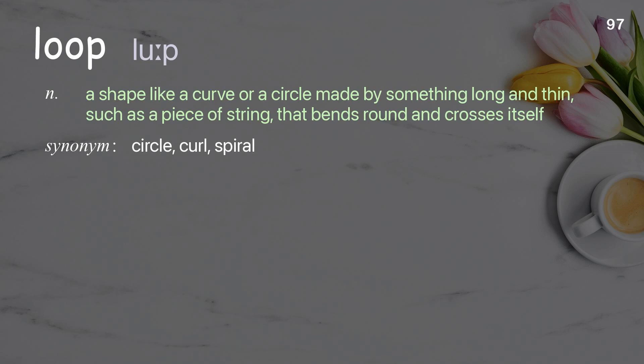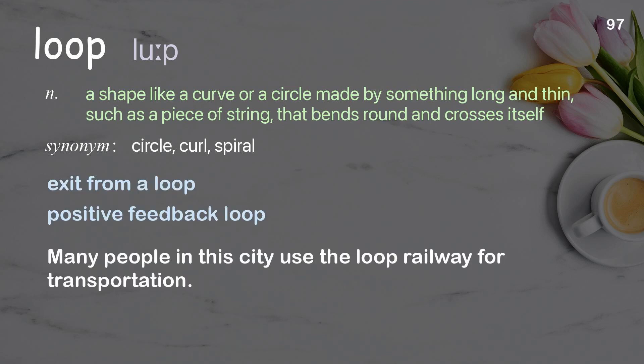Loop: a shape like a curve or a circle made by something long and thin, such as a piece of string, that bends round and crosses itself. Examples: exit from a loop, positive feedback loop. Many people in this city use the loop railway for transportation.